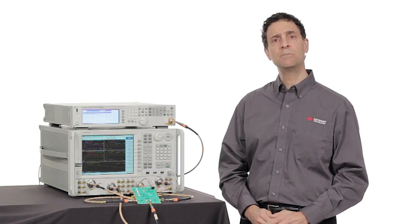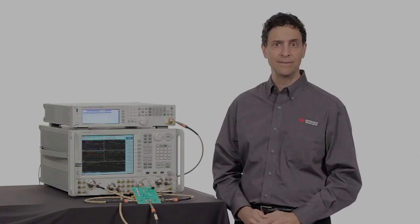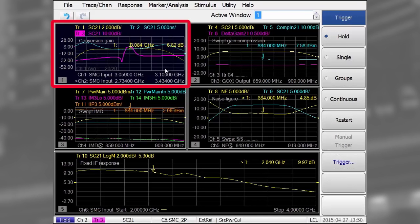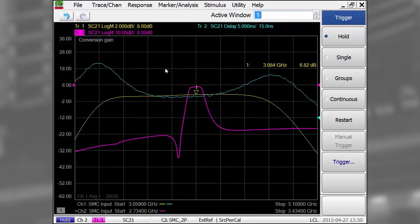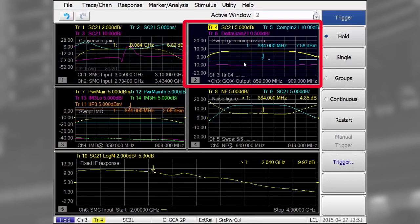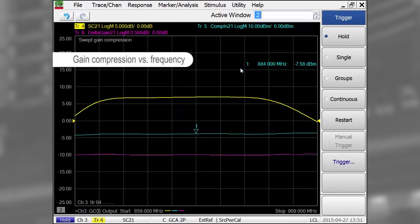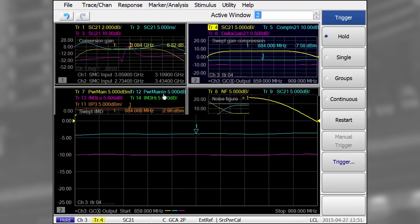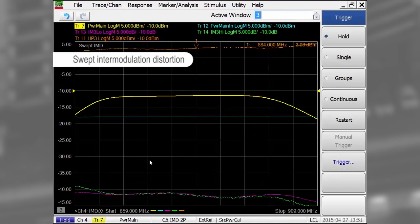Let's take a look at the PNA spectrum analyzer in action. In this window, I'm performing a narrow frequency sweep with a fixed LO to look at gain and group delay in the pass band, and a wider sweep to look at stop band performance. In this window, I can quickly measure gain compression versus frequency, and in this window, I'm measuring swept intermodulation distortion performance.